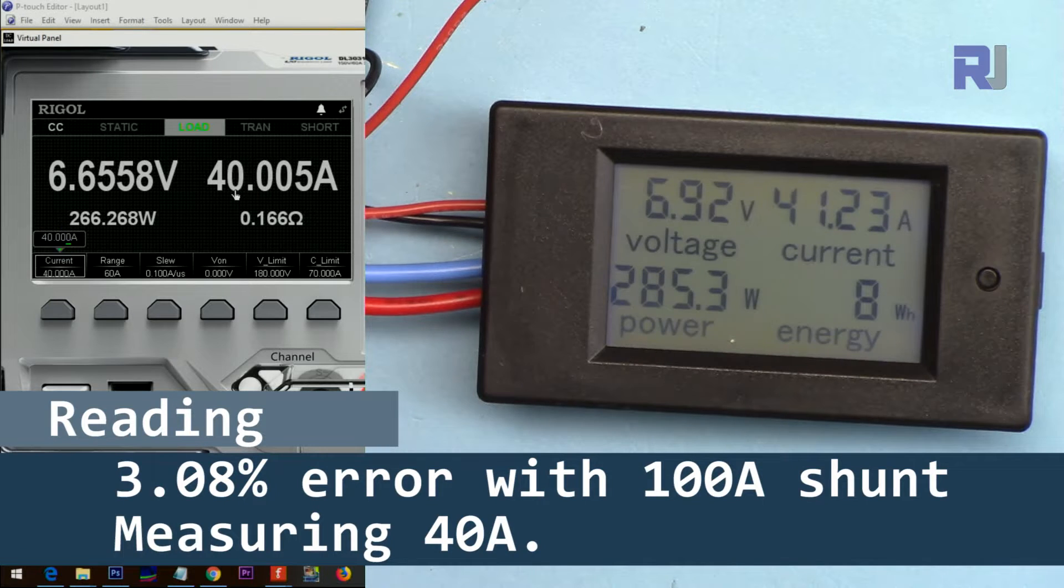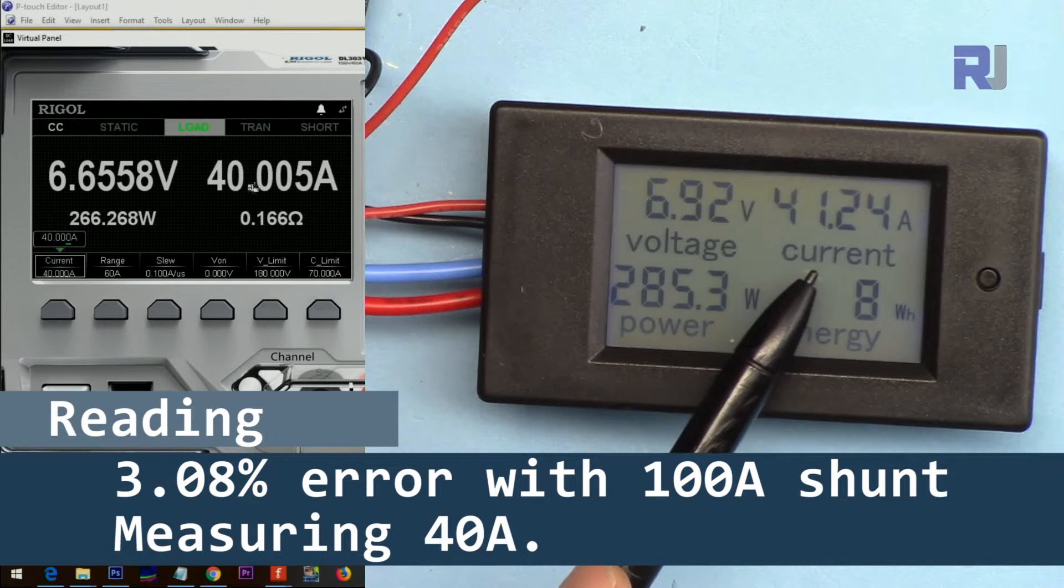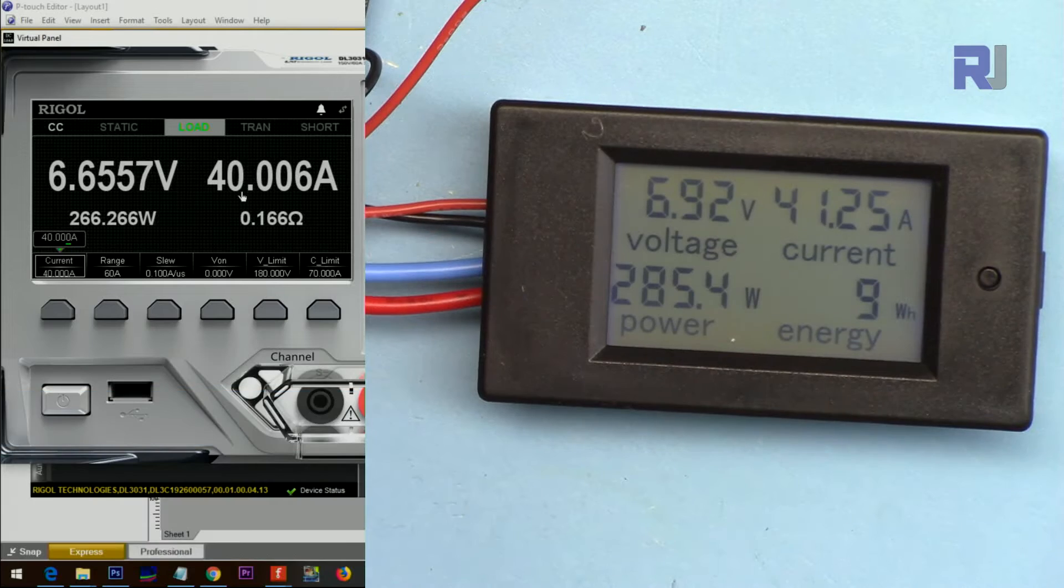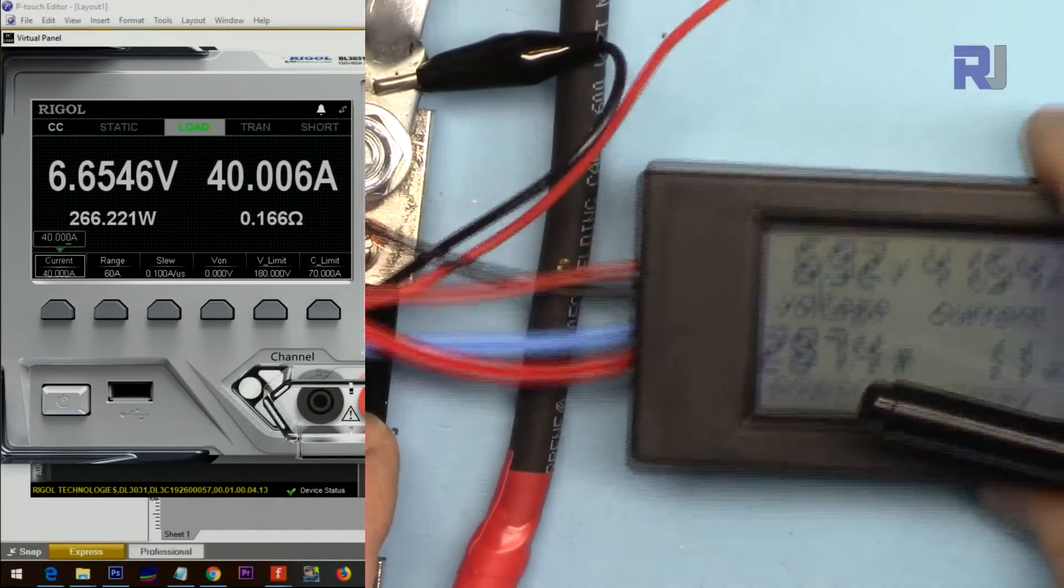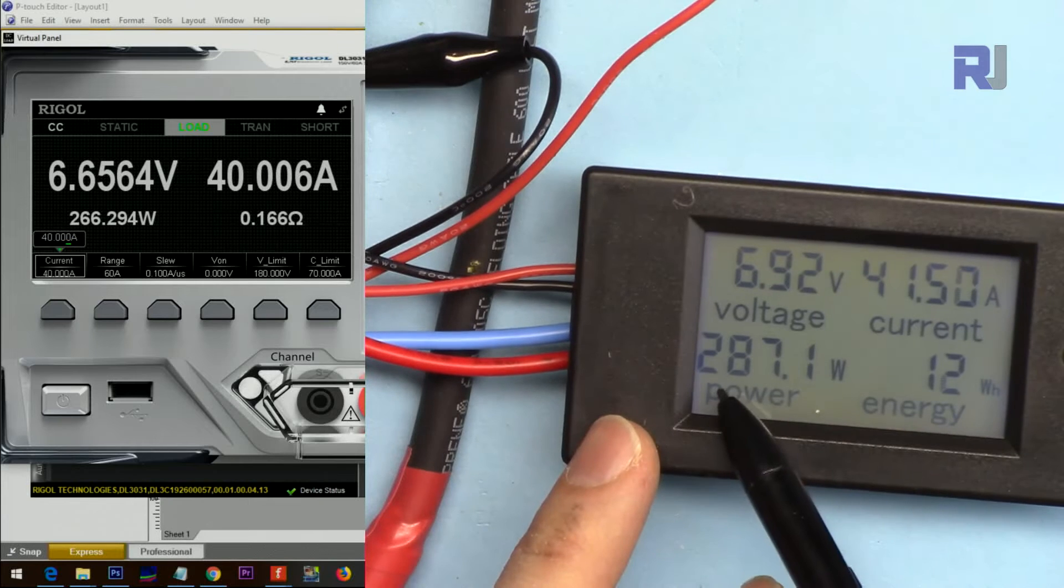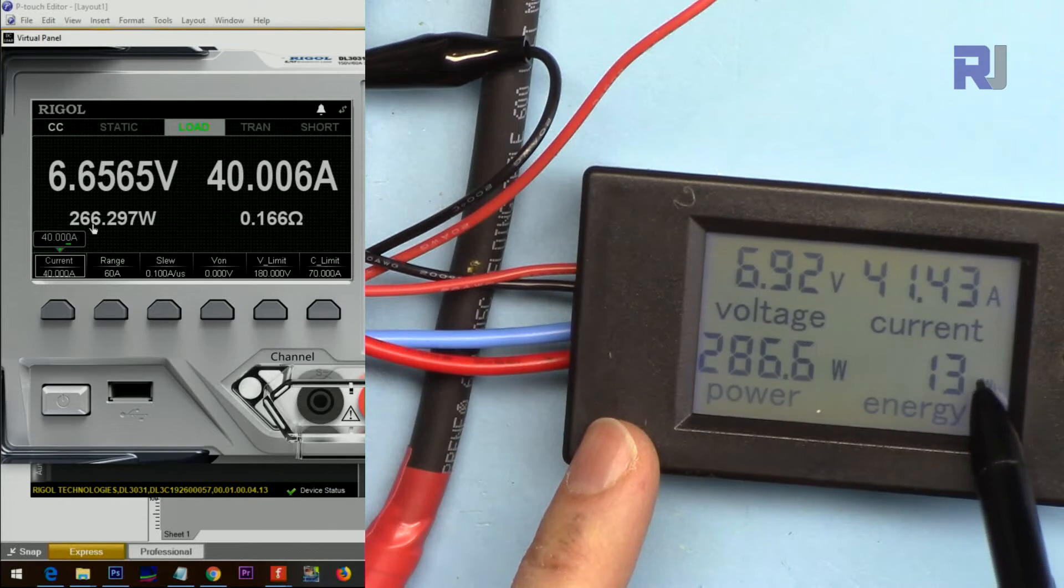Now I set it at 40 ampere. As you can see it shows forty one point two four, a discrepancy. The shunt resistor is very cool, absolutely like room temperature here. The power that this one shows is 287 and this is the power that we are reading, 266. This shows the total energy that has been consumed.